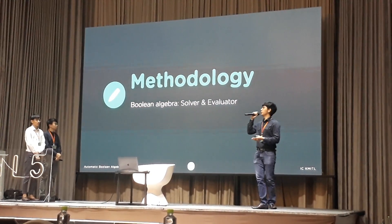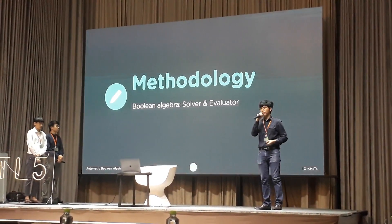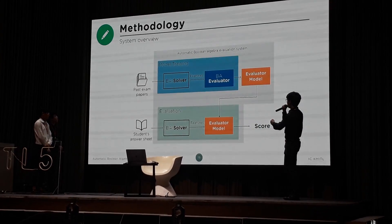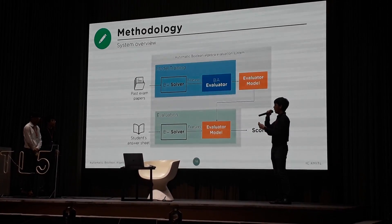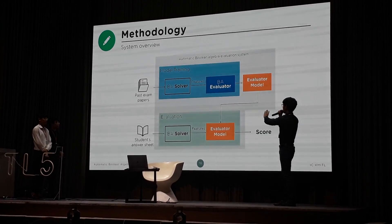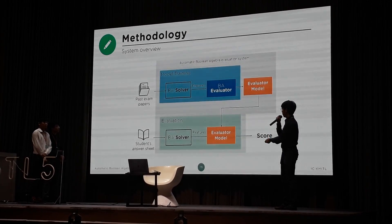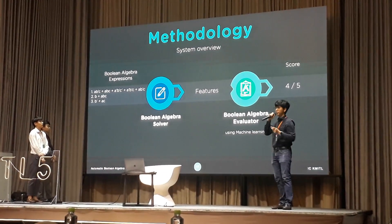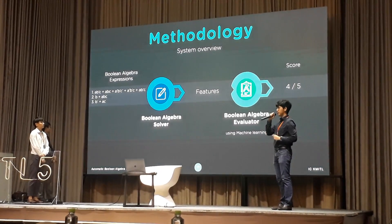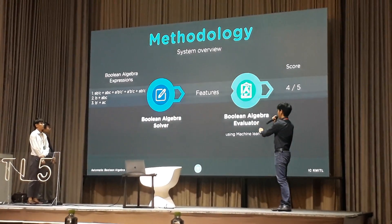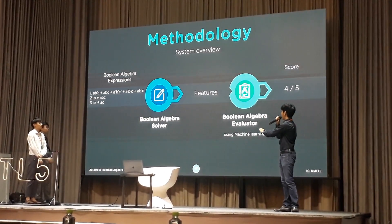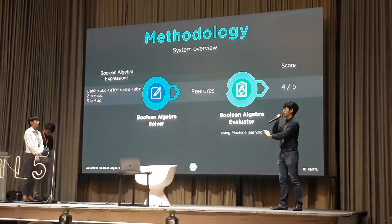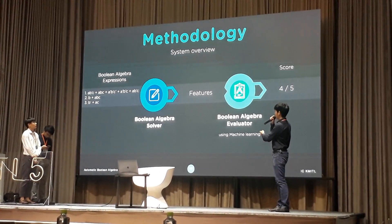Next, we will explain our methodology to achieve the described objectives. We separate the system into two models: model training and evaluation. Both contain exactly the same components inside — the solver and the evaluator. The main flow is: a Boolean algebraic expression, which is the student answer, is fed into the solver to extract features. After extracting the features, they are fed into the evaluator, which uses machine learning to evaluate the score.